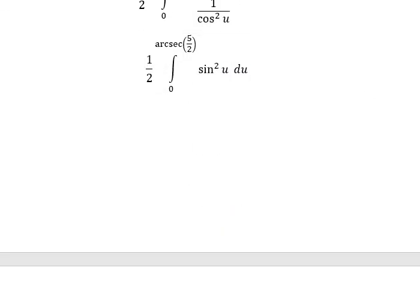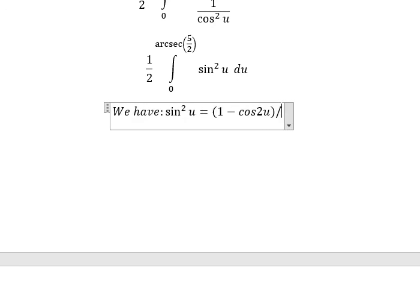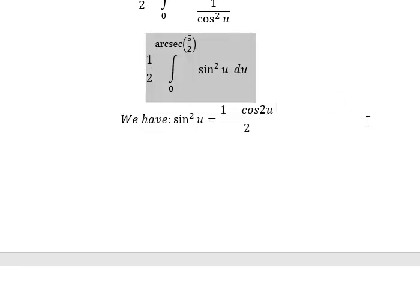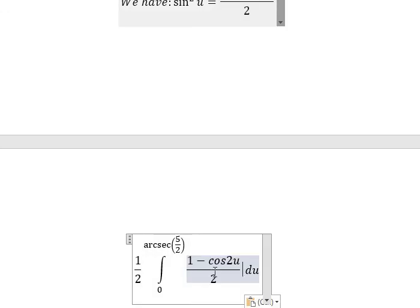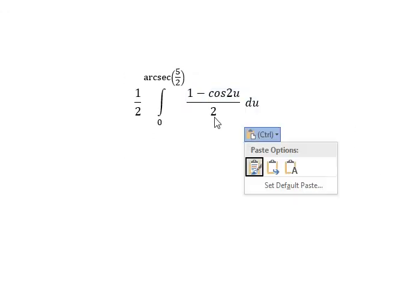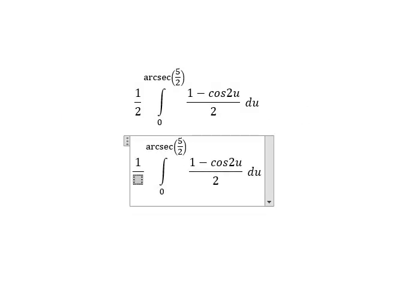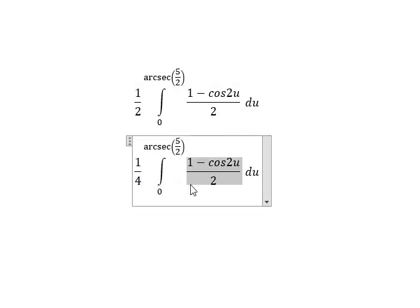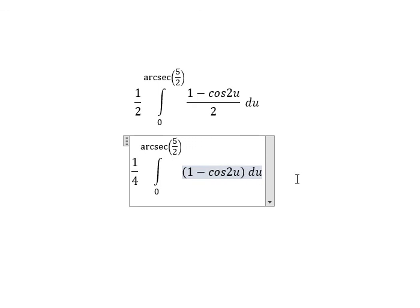Using the formula: sin²(u) = (1 − cos(2u))/2. We substitute this in and pull the 2 outside, giving us one-fourth. Now we have the integrand ready for the final integration.